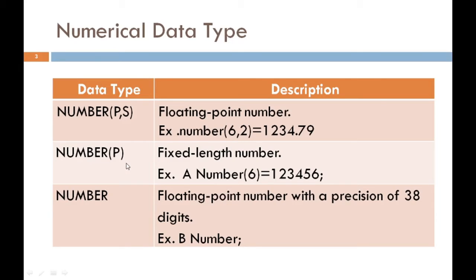The next category is NUMBER(P), in which we skip the scale and only use the precision. So suppose you want to store the value 123456 in a column, then we have to specify NUMBER with precision 6. The next category is simply NUMBER, which also skips both precision and scale, since precision and scale are both optional. So we can directly use NUMBER. The maximum length of this precision is 38 digits.